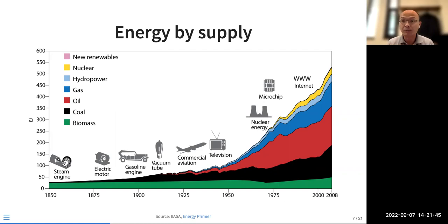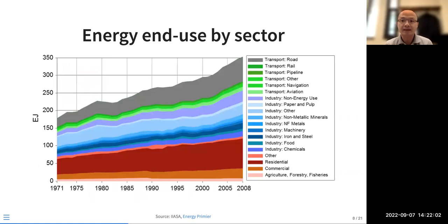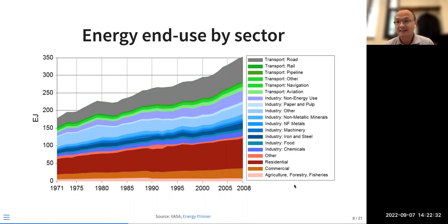The more we can use solar PV, wind, and lower-carbon energy sources, the better chance we have to deal with climate change. Looking at end-use by sector — transport, industry, and building are the main energy-consuming sectors, and the residential sector is a big part as well. At the global scale, this shows the rough scale and evolution of end-use energy supply by sector.